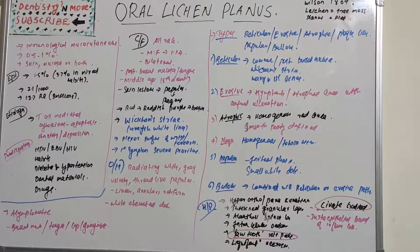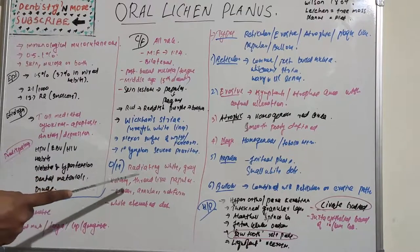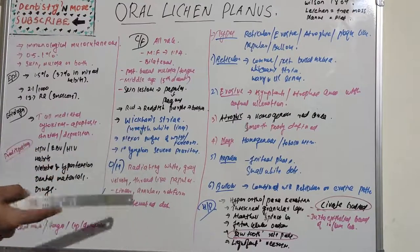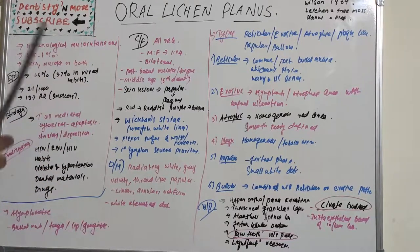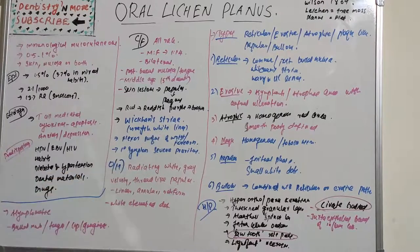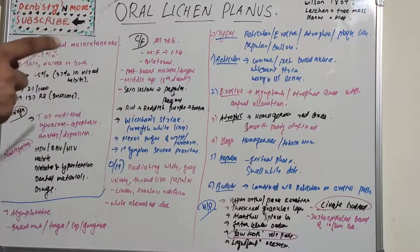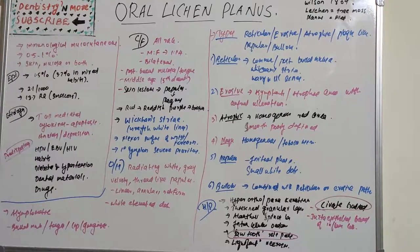In the oral cavity, the lesion consists of radiating white-gray, velvety, thread-like papules in a linear, annular, or retiform arrangement, forming typical reticular patches, rings, and streaks. A tiny white elevated dot is present at the intersection of the white lines — these are Wickham's striae. The arrangement can be linear, annular, or retiform. The most common site is the buccal mucosa, and lesions are usually asymptomatic and bilaterally symmetrical.